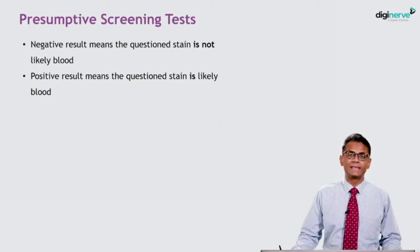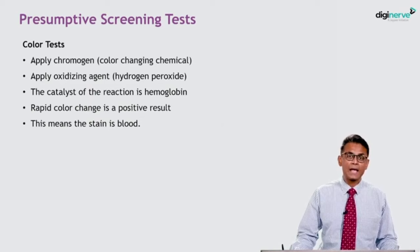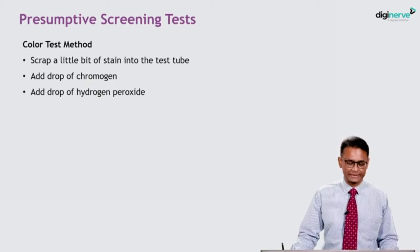A negative presumptive screening test result means the questioned stain is not likely blood. A positive result means that the questioned stain is likely blood — you are presuming it can be blood. The presumptive test produces a color reaction or release of light. The tests rely on the catalytic properties of blood, that is the presence of hemoglobin. For the color test, apply a chromogen (a color-changing chemical), then an oxidizing agent, hydrogen peroxide. The catalyst of the reaction is hemoglobin. A rapid color change is a positive result, meaning the stain is blood.